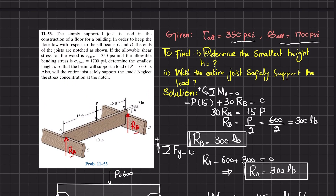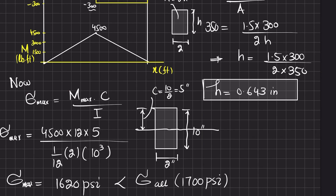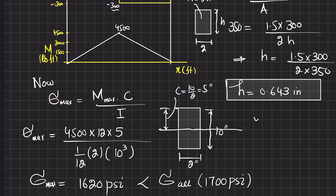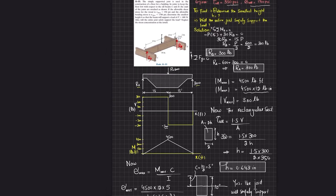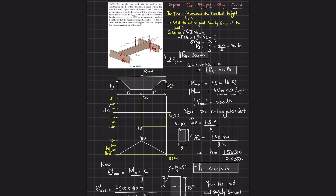The conclusion is that yes, the joist will safely support the load, since the calculated bending stress of 1620 psi is below the allowable 1700 psi. That was all for problem 11-53. I hope you enjoyed this video and learned from it. If you're new to the channel, please subscribe and press the bell icon to get notifications about the latest videos. Any questions can be asked in the comment section.